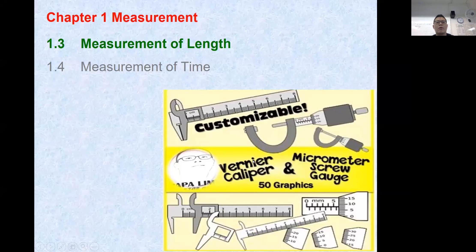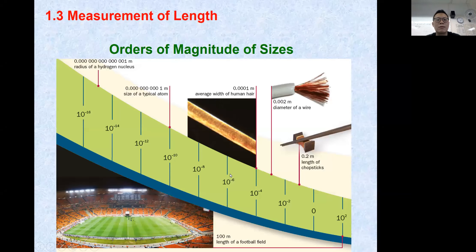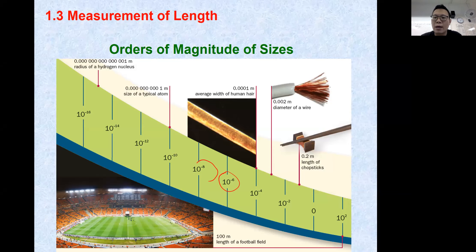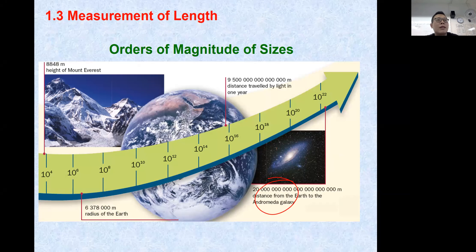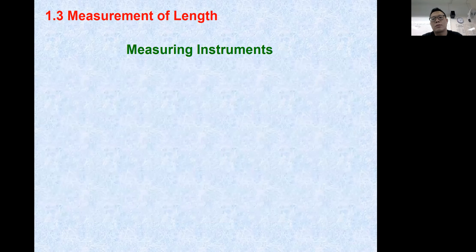For measurement of length and time, after learning about prefixes we'll have an idea of how big or small things can be. Values like 10 to the power of minus 19 or minus 6 show how small things can be - as small as the width of a hair. It can also be as big as mega, giga, or even 10 to the power of 14, as big as galaxies. Prefixes give us an easy way of representing numbers.